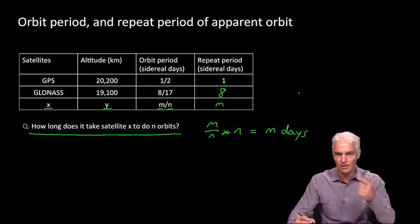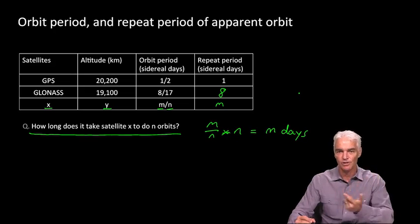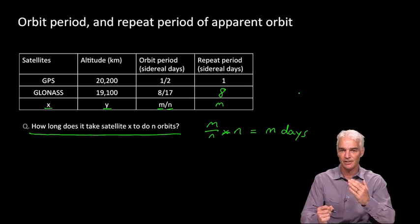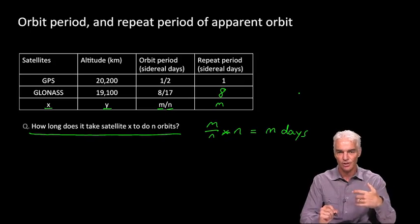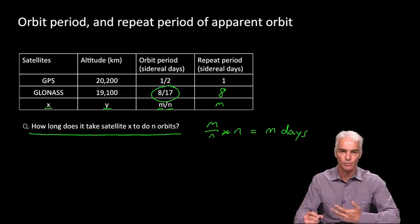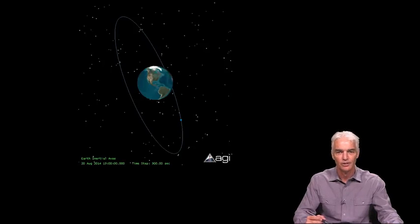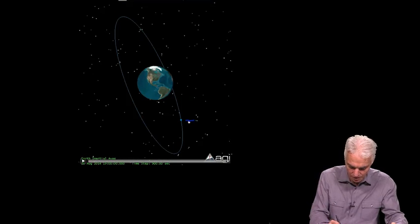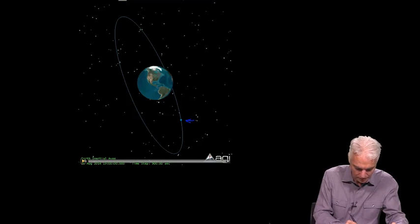If you see a GLONASS satellite in the sky, a day later you're not going to see it in the same place in the sky. You're going to have to wait 8 days for the whole thing to repeat. GPS got the best parking spot in terms of repeatability, and GLONASS chose an integer fraction so that even though their system didn't repeat every day, it at least repeats approximately every week. Let's look at the same simulation, but I've taken away the GPS satellite. We'll just look at the GLONASS satellite and let it do 17 orbits and see what happens.